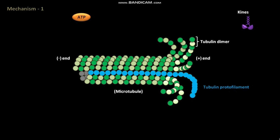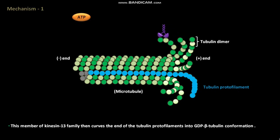A member of the kinesin-13 family is enriched at microtubule ends. This member of the kinesin-13 family binds to the end of tubulin protofilaments and then curves the end of the tubulin protofilaments into a GDP-β tubulin conformation.